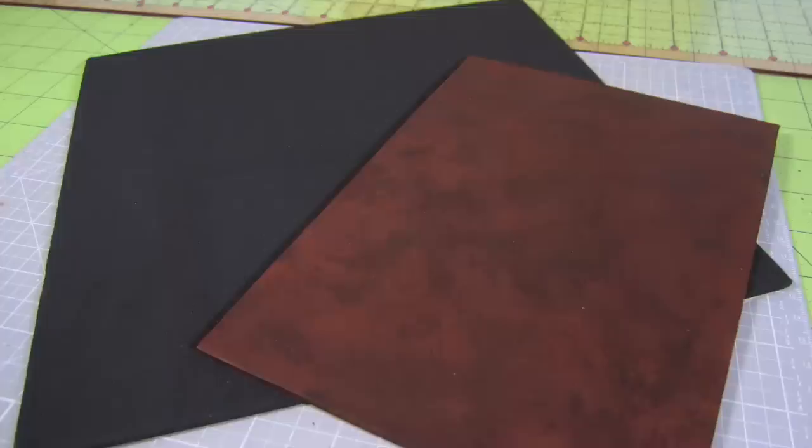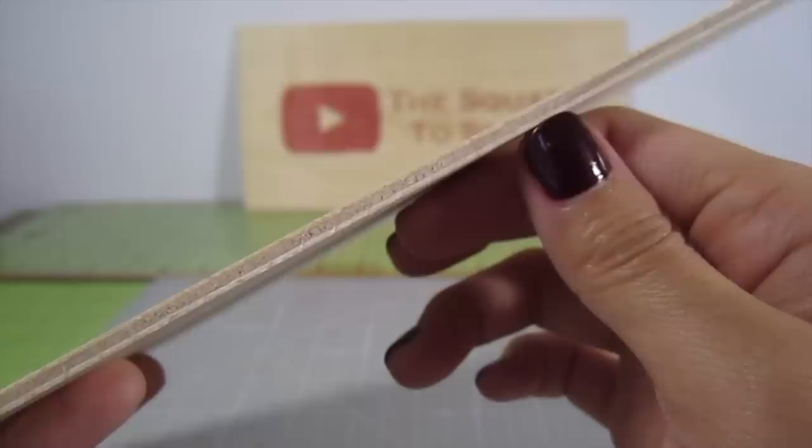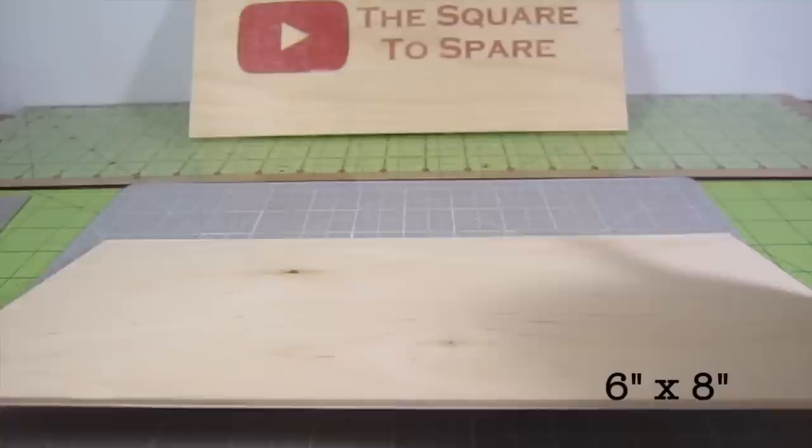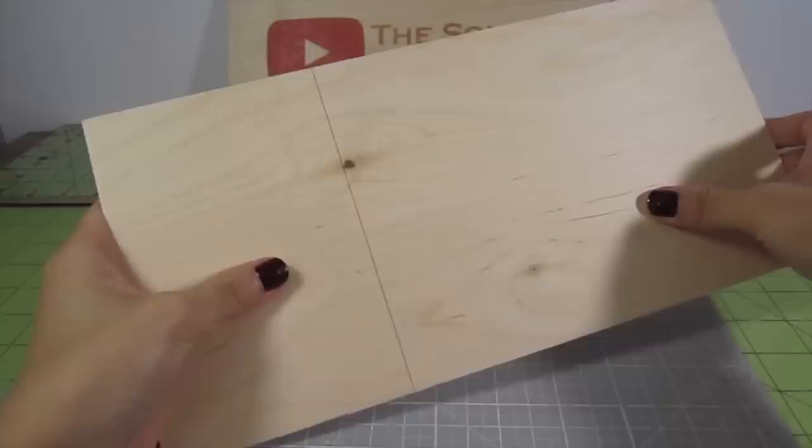The first thing we need is the base of this dollhouse. For that, I cut a 6 inch by 8 inch rectangle. I'm using 1/8th inch thick craft plywood here. Since this wood is already 6 inches wide, I only need to make 1 cut. Just run your X-Acto blade down the wood on both sides several times and snap the excess off.